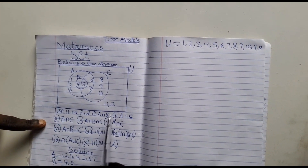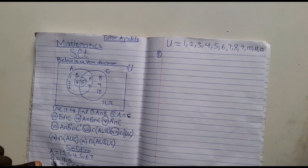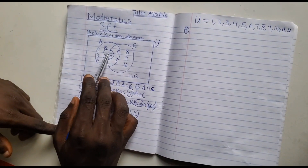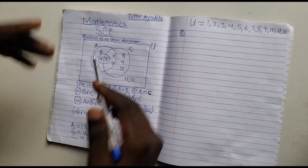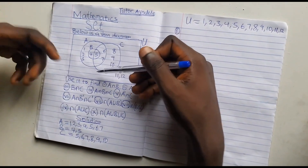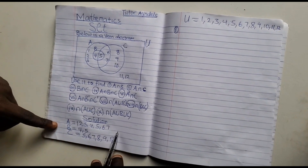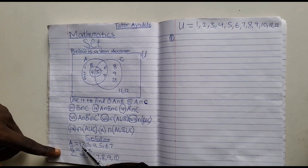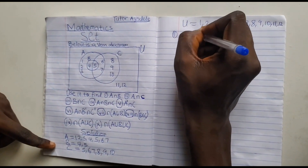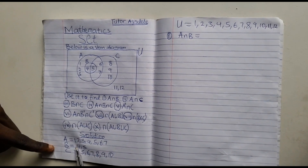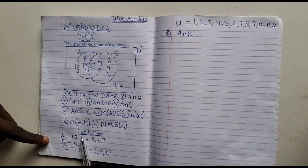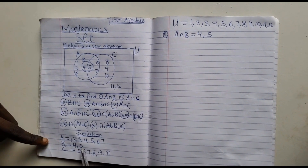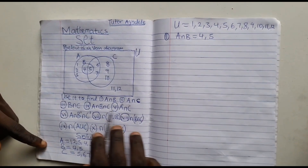Question one says: A intersect B. We have to find A intersect B. A intersect B means elements that are present in A that are also present in B. Looking at the elements in A and B: 1 is in A but not in B; 2 is in A but not in B; 3 is in A but not in B; 4 is in both A and B; 5 is in both A and B. So A intersect B equals {4, 5}. That is our number one.